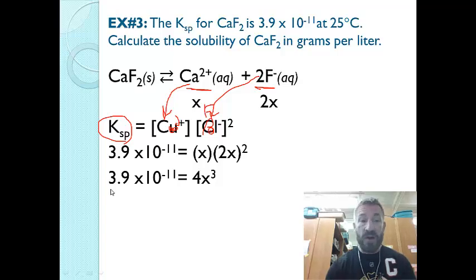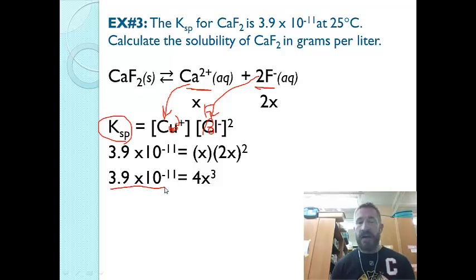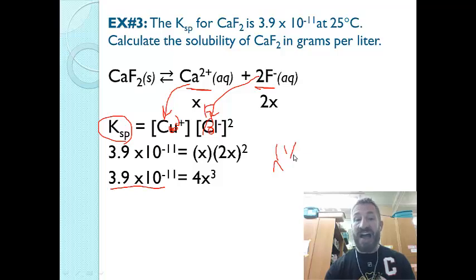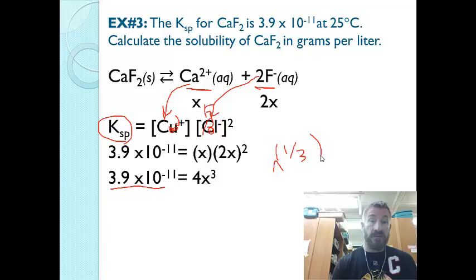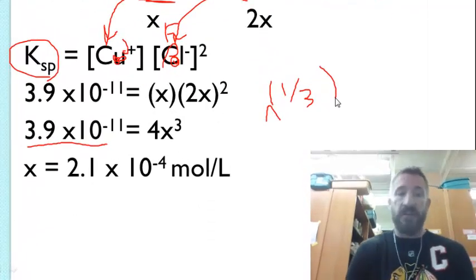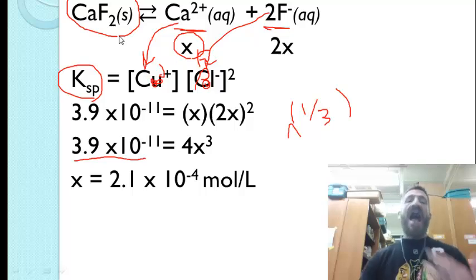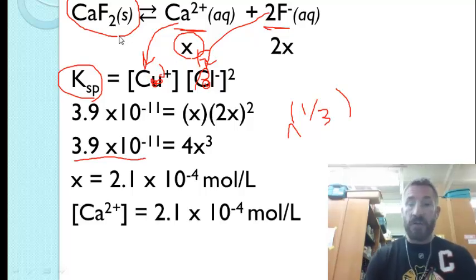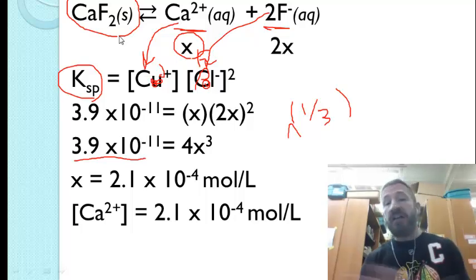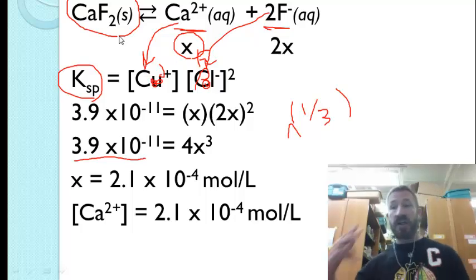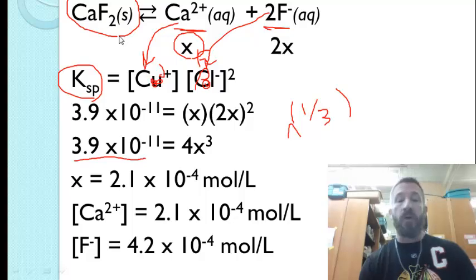To solve for x, divide 3.9 × 10⁻¹¹ by 4 and take the cube root. To take a cube root on your calculator, use the caret (^) and enter (1/3) as the exponent. You should find x = 2.1 × 10⁻⁴. This tells us two things: the concentration of calcium is 2.1 × 10⁻⁴ M, and the molar solubility of the compound is also 2.1 × 10⁻⁴ mol/L. The concentration of fluoride is twice that: 4.2 × 10⁻⁴ M.